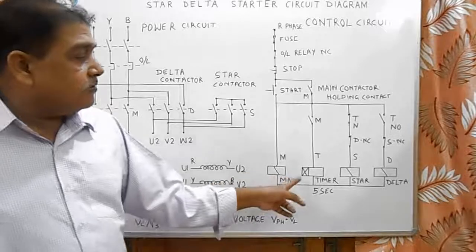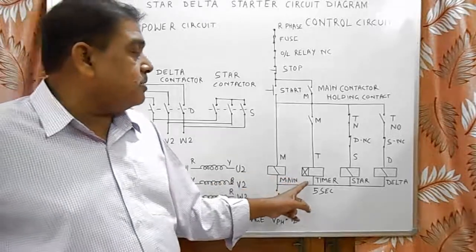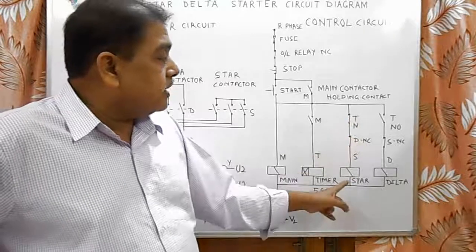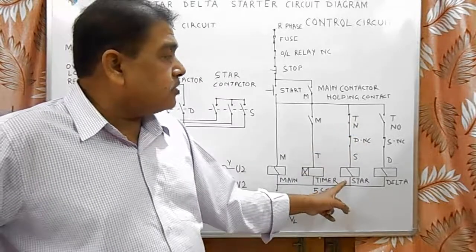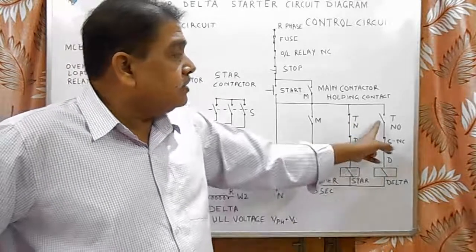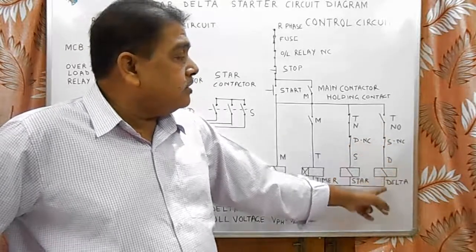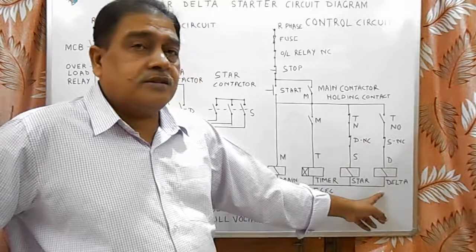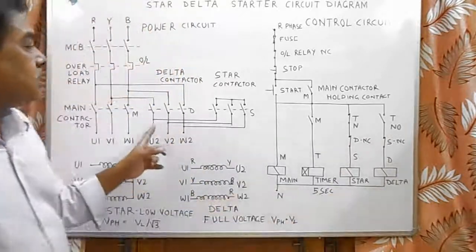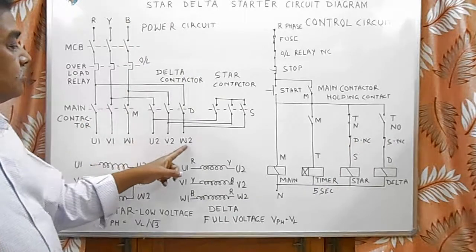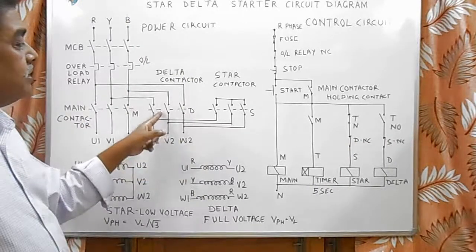After 5 seconds completion of the timer, the NC contactor opens up and star contactor drops out, whereas the NO contactor of the timer closes and delta contactor starts. As soon as delta contactor starts, supply goes to U2, V2, W2 with the help of delta contactor.